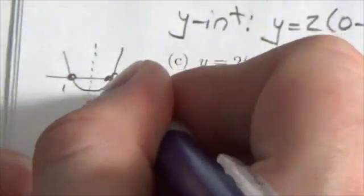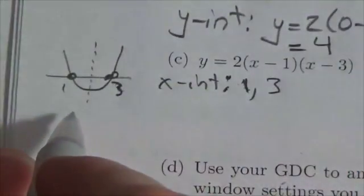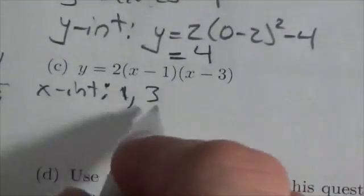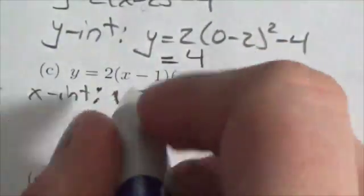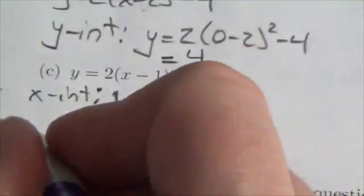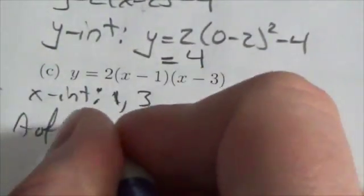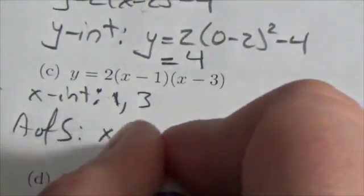My axis of symmetry is going to run right down the middle of those two. So my axis of symmetry is going to be the average of those two values. And the average of 1 and 3, conveniently enough, is 2. So my axis of symmetry is going to be the line x equals 2.